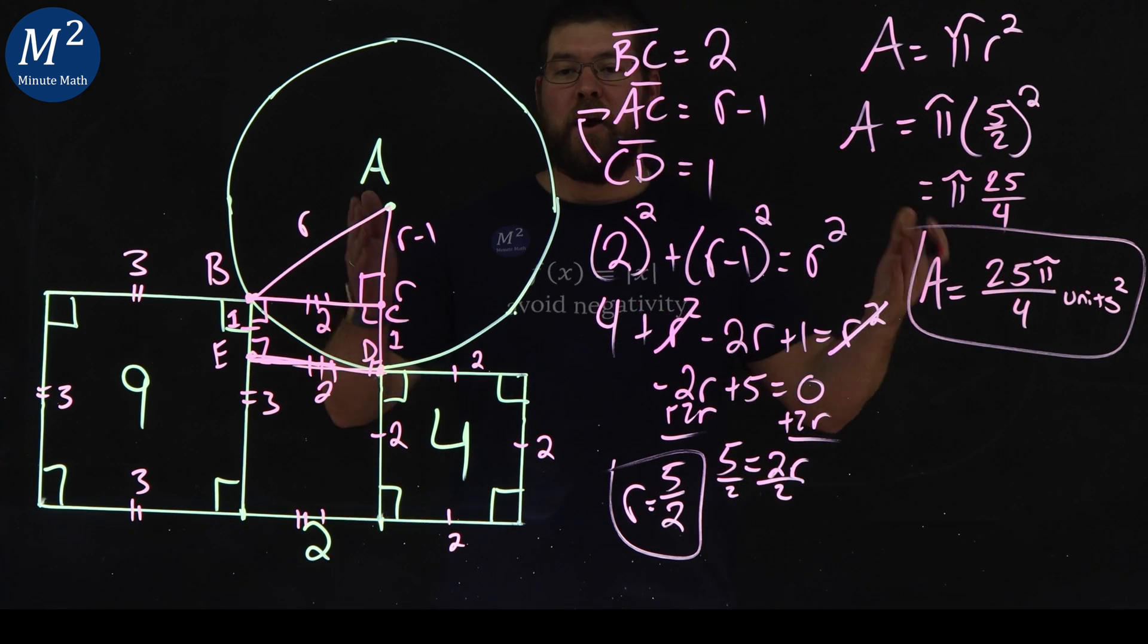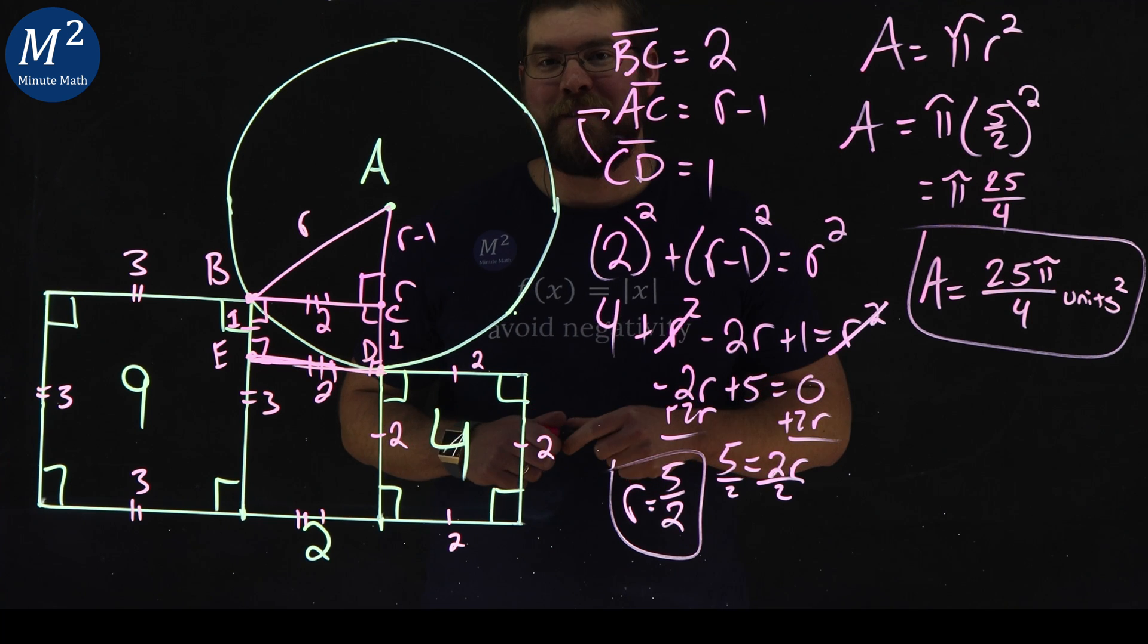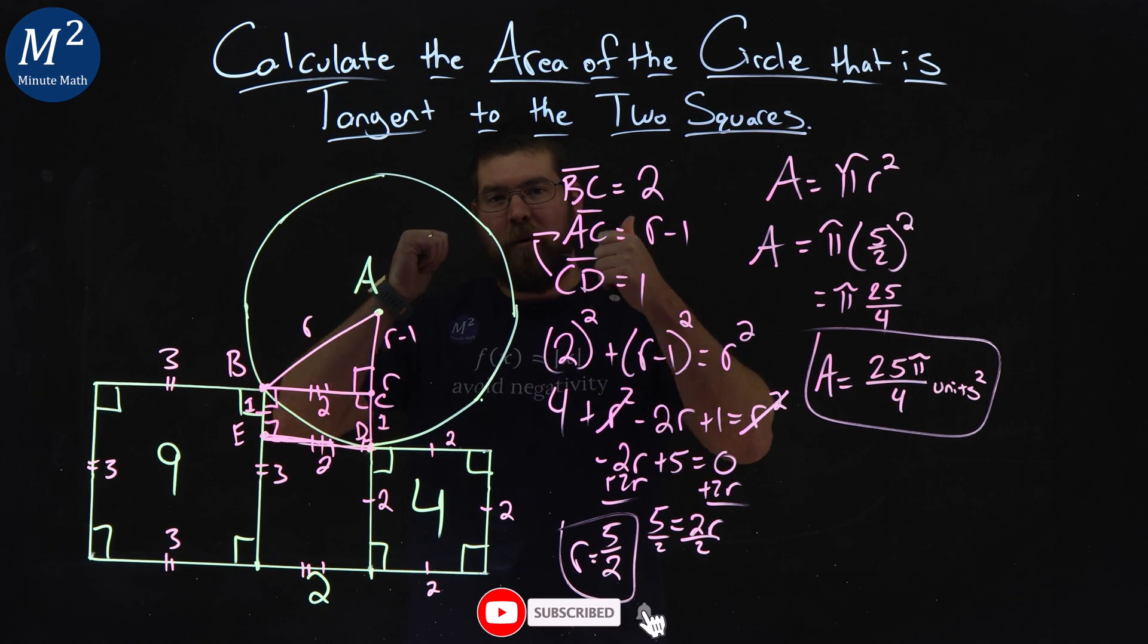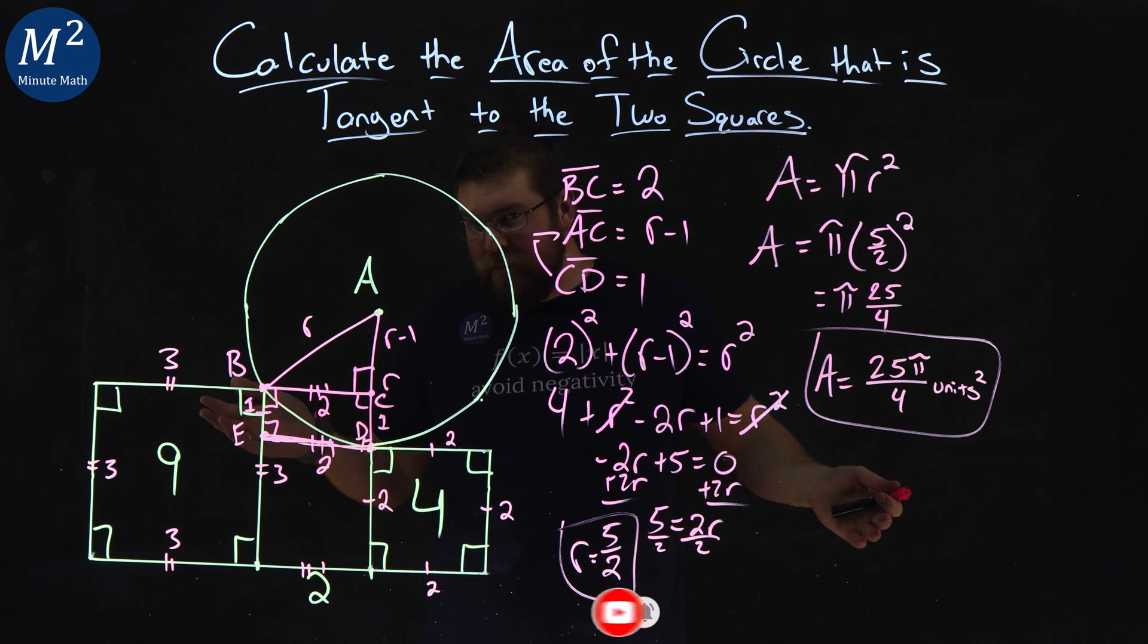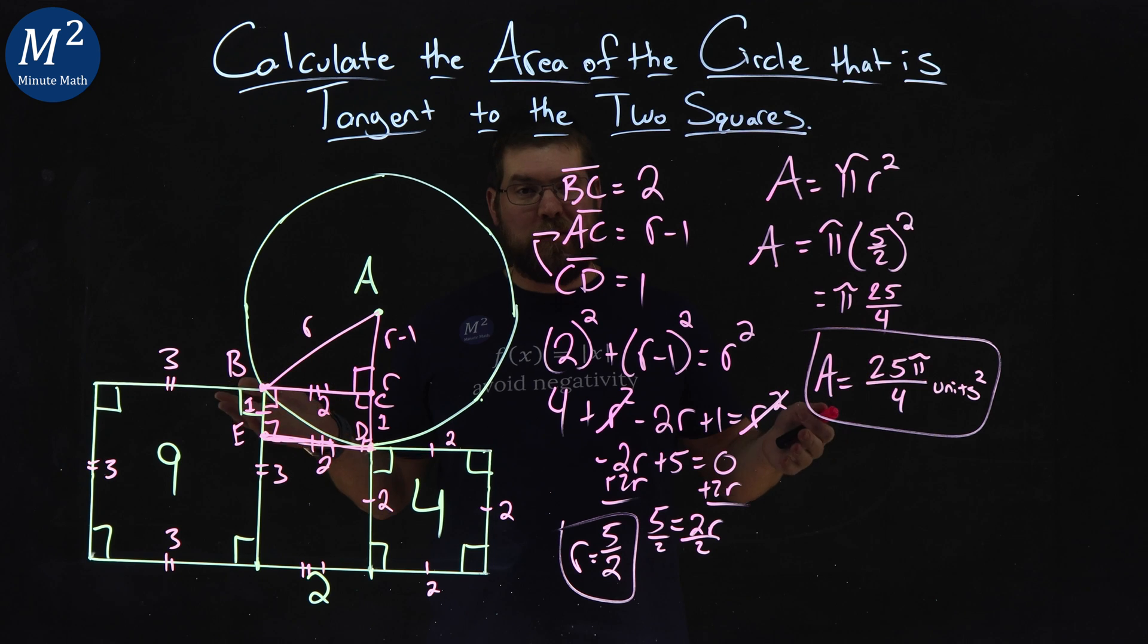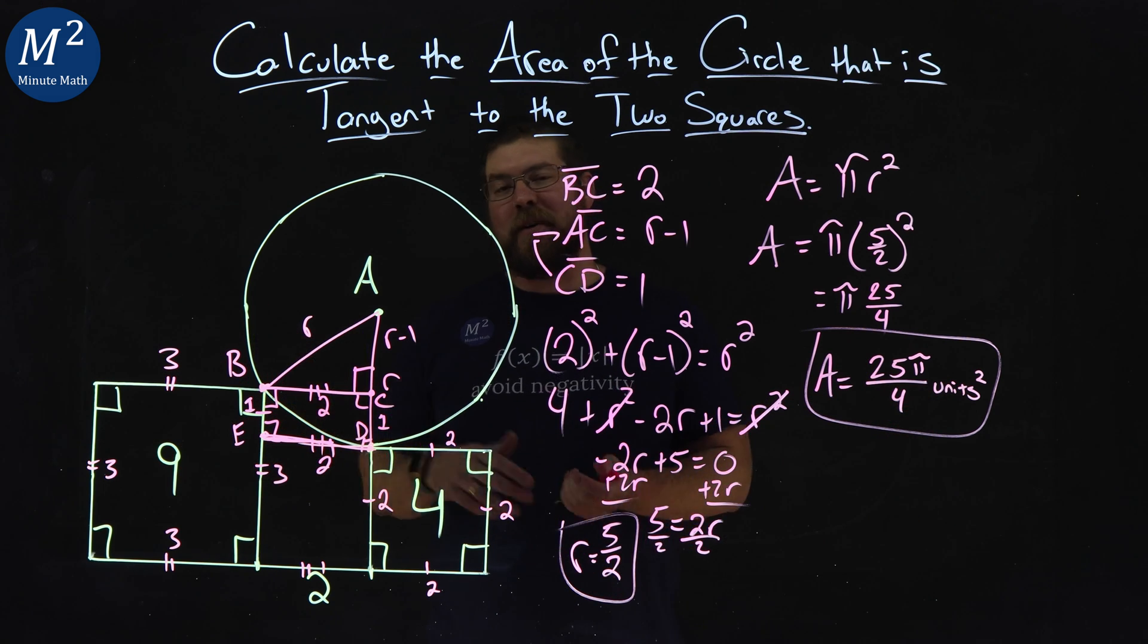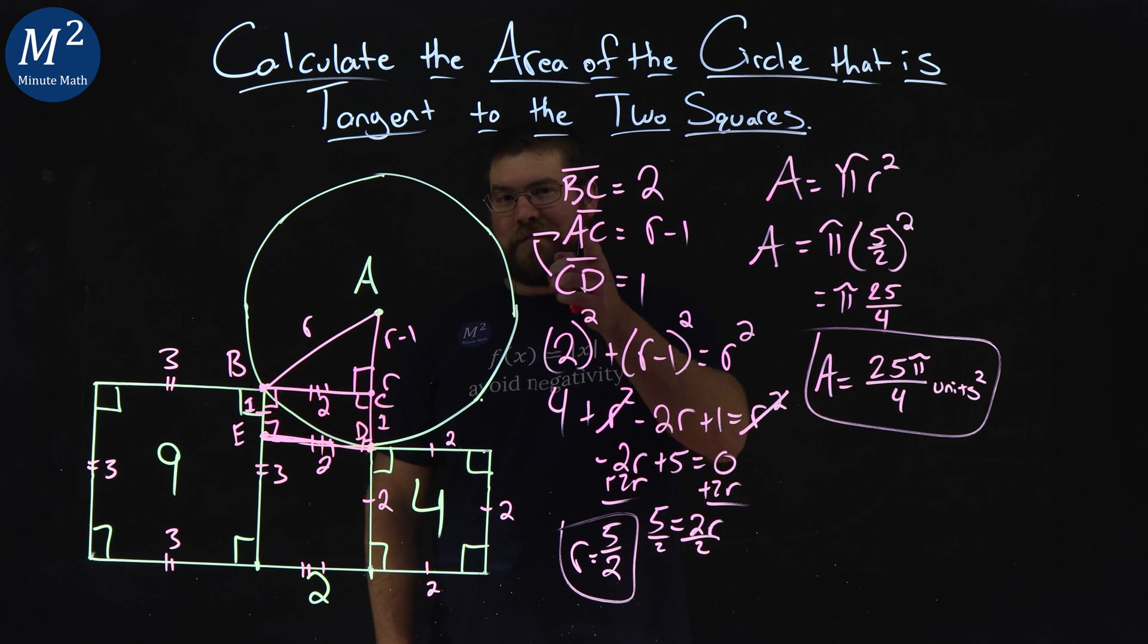And there we have it. We found the area of our circle, 25 pi over four units squared. I hope you learned something on how to solve this problem. If you did, way to go. That's the whole point of this. And if it was helpful, make sure you like this video and subscribe to our YouTube channel. I hope I earned your subscription. That really helps us make more of these fun videos. So I hope you enjoyed this problem. And as always, thanks for watching.